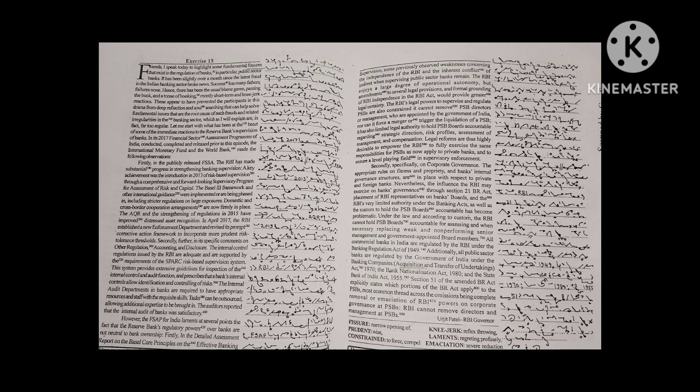The Basel framework and other international guidance are firmly in place. The AQR and the strengthening of regulations in 2015 have improved distressed asset recognition. In April 2017, the RBI established a new enforcement department and revised its prompt corrective action framework to incorporate more prudent risk tolerance thresholds.